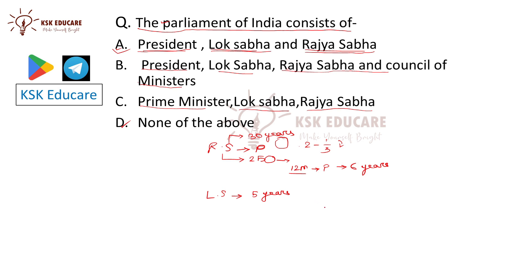So our Parliament consists of Option A: President, Lok Sabha, and Rajya Sabha. That is the correct answer.